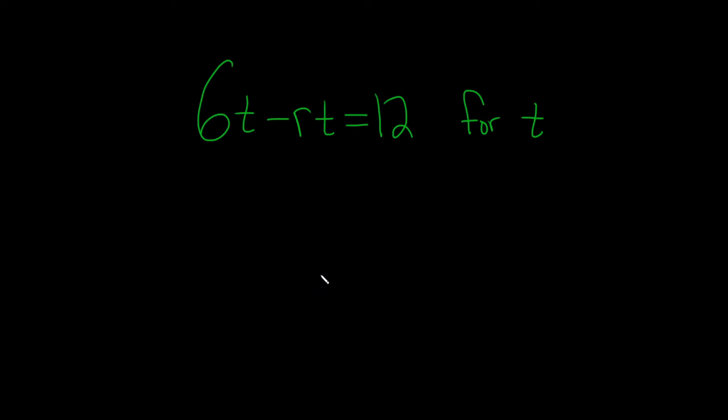In this problem we have what's called a literal equation and we have to solve it for t. So we have 6t minus rt equals 12.